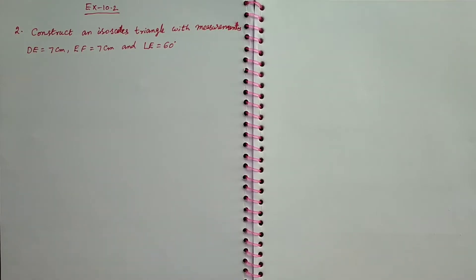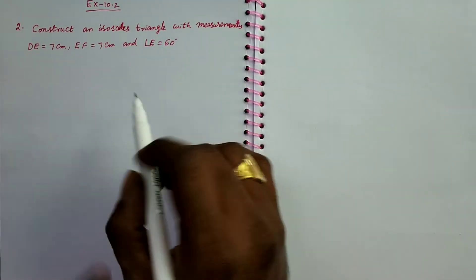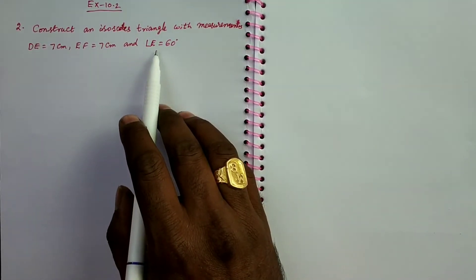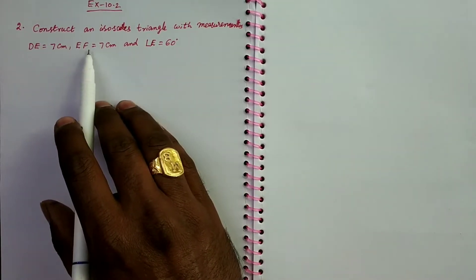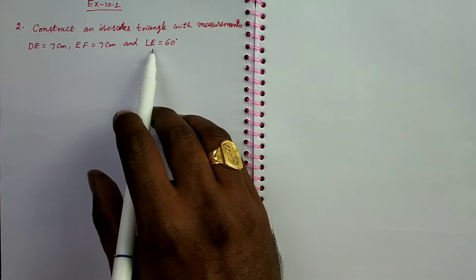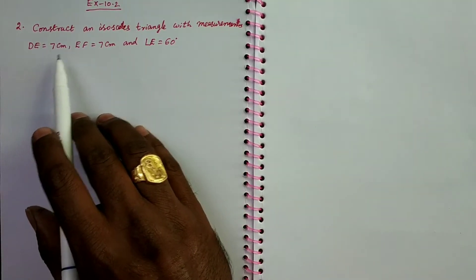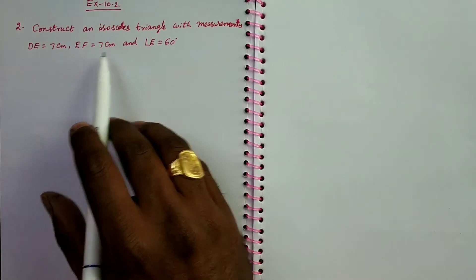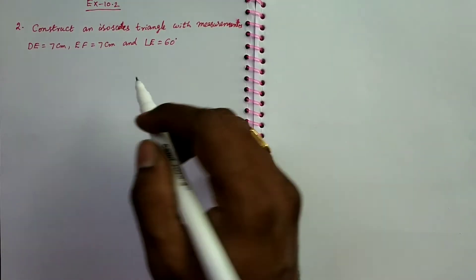First of all, draw a rough diagram of these measurements. Angle E is equal to 60 degrees. So DE and EF are both at angle E. You can take DE as base or EF as base. No problem. I preferred EF as base.